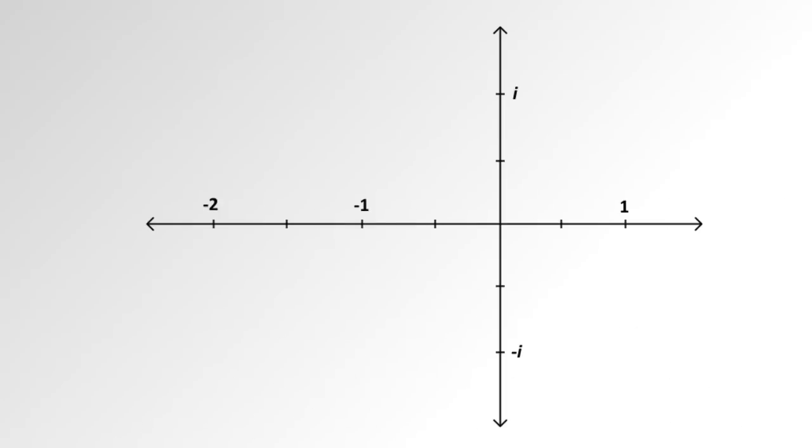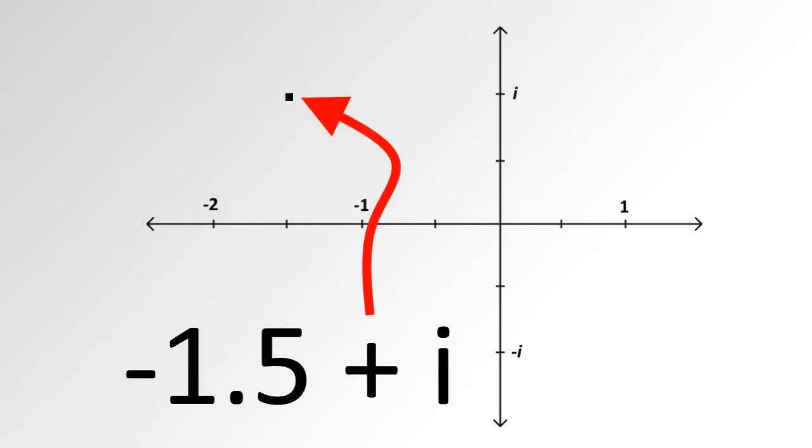This is the complex plane. Instead of an x and y axis, we have a real and imaginary axis. Cool! For example, this complex number would be here on the plane. One and a half units left, and one unit up. Mega cool!